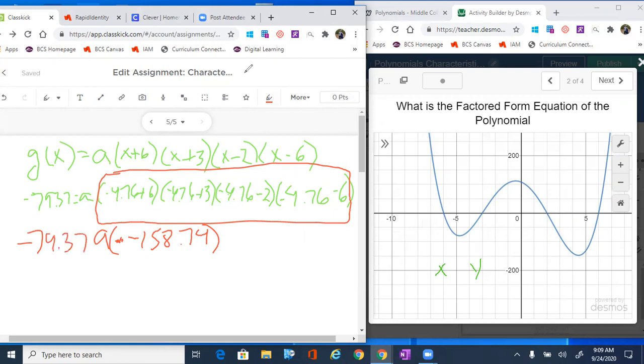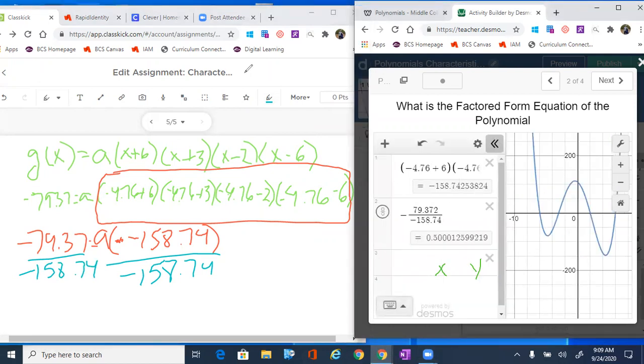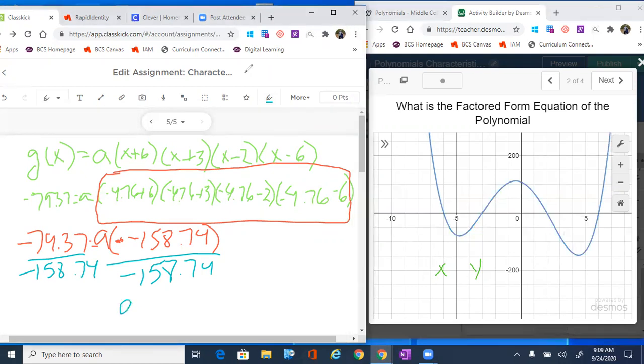That equals 79.37. Now the only thing we need to do is divide off that negative 158.74. I threw that in the computer in Desmos already—it's 0.5, boom! So a comes out and we get 0.5.